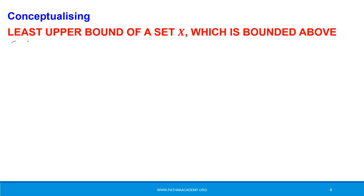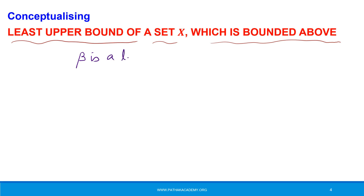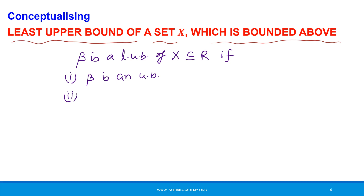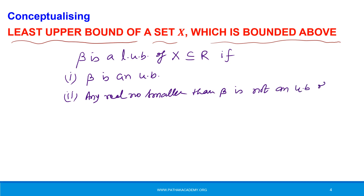We should talk of the least upper bound of a set X only when it is bounded above, because if we don't have an upper bound, we cannot talk of a least upper bound. A number beta is a least upper bound of X if: first, it must be an upper bound; and second, it must be the least of all upper bounds, meaning any number smaller than beta is not an upper bound of X.